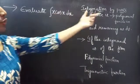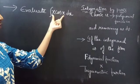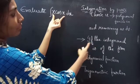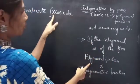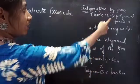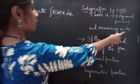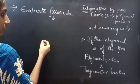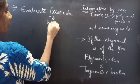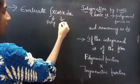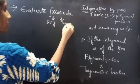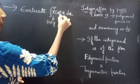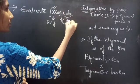Here we are going to use integration by parts because we have an integrand. If the integrand is of the form polynomial function into trigonometric function, then we can choose the polynomial function as u and the remaining as dv. So here in the given integrand we have polynomial function x and trigonometric function cos x. So we will choose this polynomial function as u and the remaining as dv.